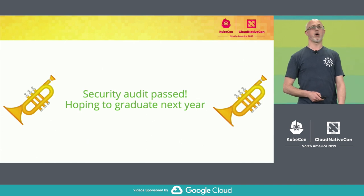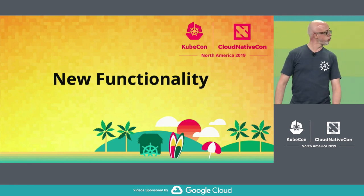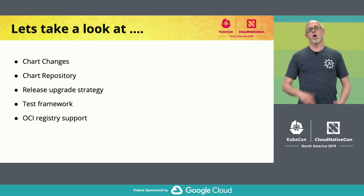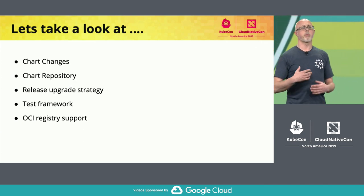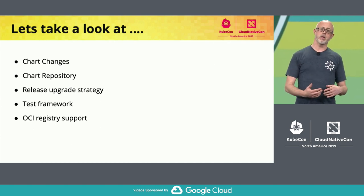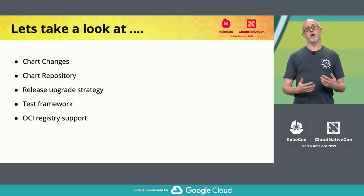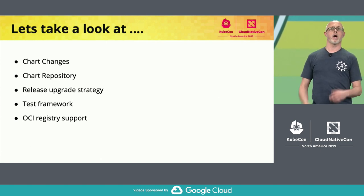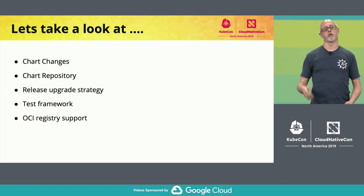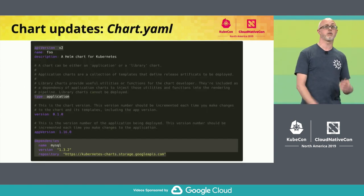Let's move on to new functionality. A lot of new functionality has been brought into Helm 3 around usability, stability, and making Helm more battle-hardened for production. I'm going to cover the changes in charts, repos, the upgrade strategy, test frameworks, and OCI registry.